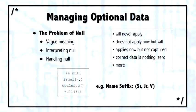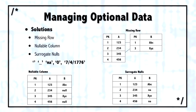But if we can agree that there is a problem of optional data and it has to be handled, there are only three possible solutions. The first one is a nullable column, meaning that you actually allow a null to be written in the column, and when you retrieve that data, you're going to see the nulls.